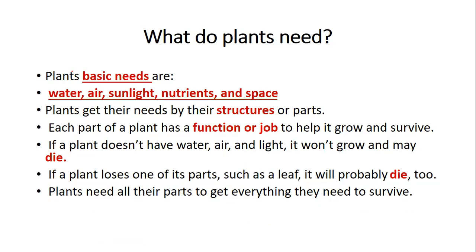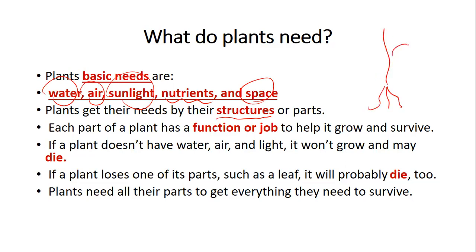What do plants need? Plants' basic needs are water, air, sunlight, nutrients, and space to grow. Plants get their needs through their structures or parts, which are the roots deep in the ground, also the stem and the leaves.